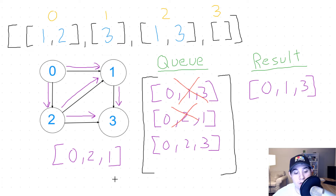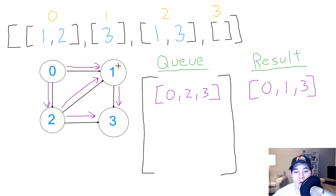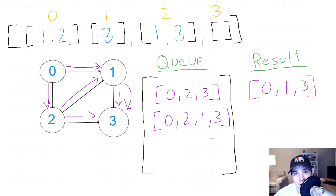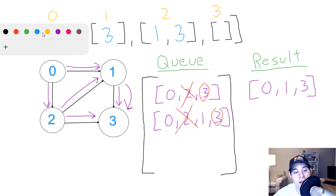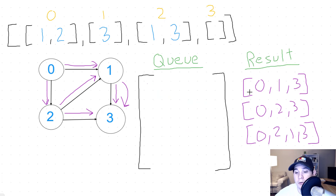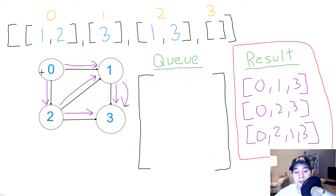Now we pull [0,2,1] from the queue. The last node is 1, which is not the goal, so we continue BFS from node 1 again. We can only go to node 3, adding path [0,2,1,3]. Then we pull the remaining paths — both [0,2,3] and [0,2,1,3] have 3 as their last node, so we add both to the result. Our final result has a total of three different paths from node 0 to node 3.